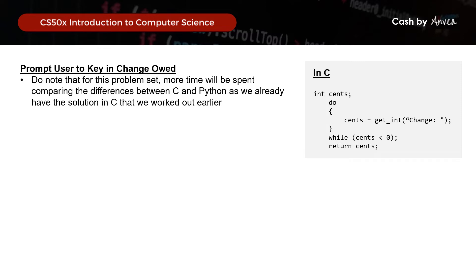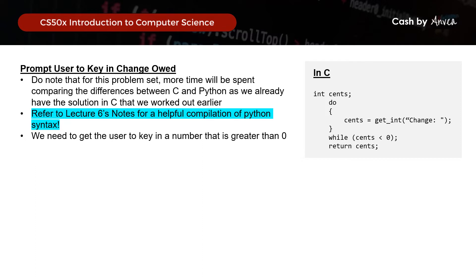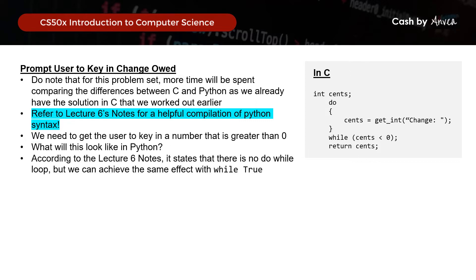One tip that really helped me for this week's problem set solution is to refer to the Lecture 6 notes for a helpful compilation of Python syntax. For the first step, we need to get the user to key in a number greater than 0. In C, we used a do-while loop, which keeps running the prompt as long as the input received is less than or equal to 0. According to the Lecture 6 notes, while there is no do-while loop in Python, we can achieve the same effect with 'while True'.